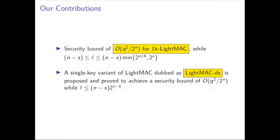Our contributions in this paper are twofold. First, we show a security bound of order q² / 2^n for 1K LightMAC for a certain range of the value of L. Second, we propose a variant of single-key LightMAC which we denote as LightMAC-DS (DS means domain separation), and we show that this achieves a security bound of birthday-bound order for some range of L. In both cases, we have gotten rid of the L term in the security bound.